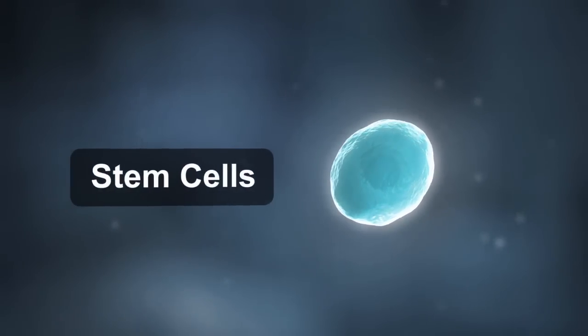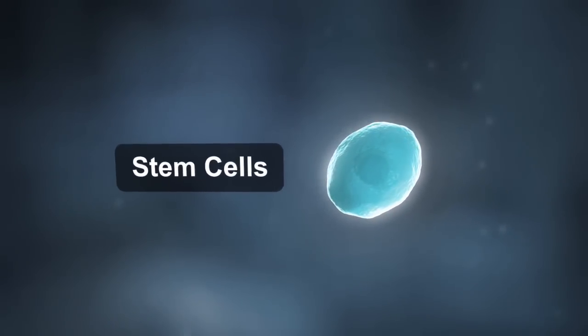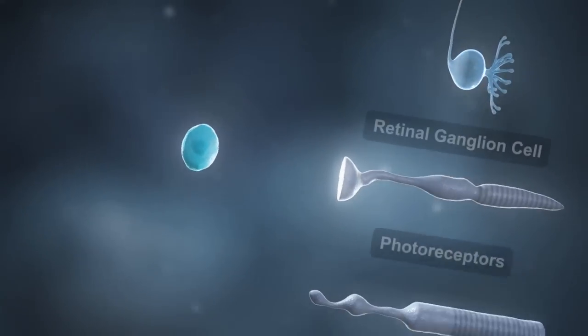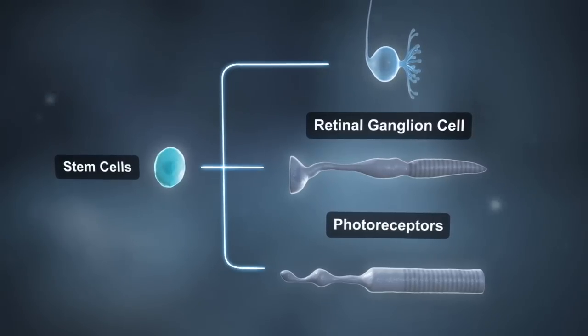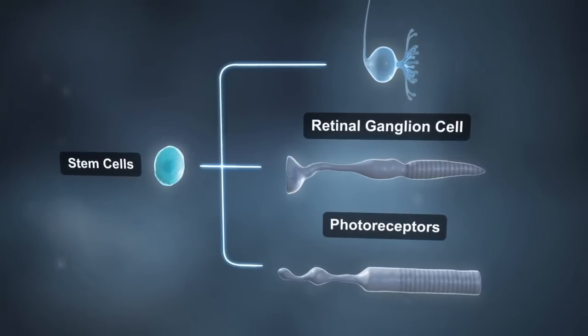One of these solutions may be to replace dead neurons in the eye or brain through stem cell therapy. Stem cells are immature cells capable of developing into many different cell types, such as neurons.